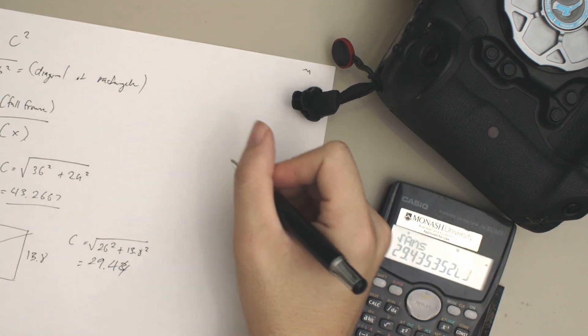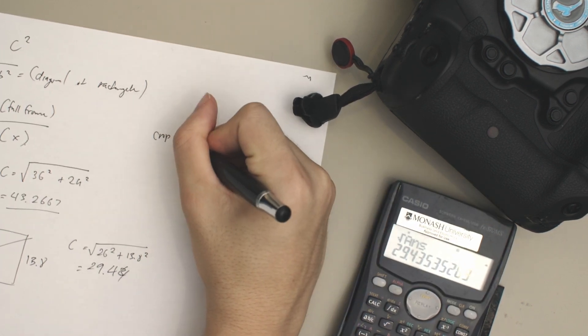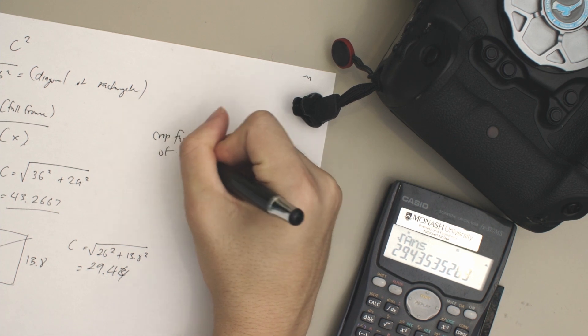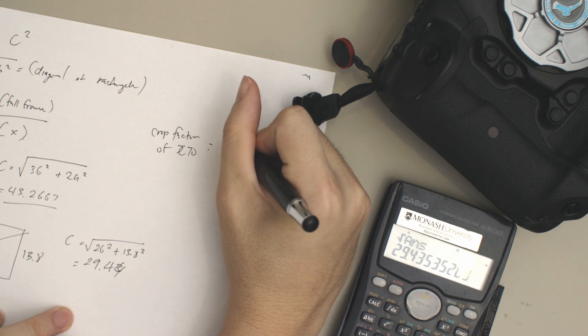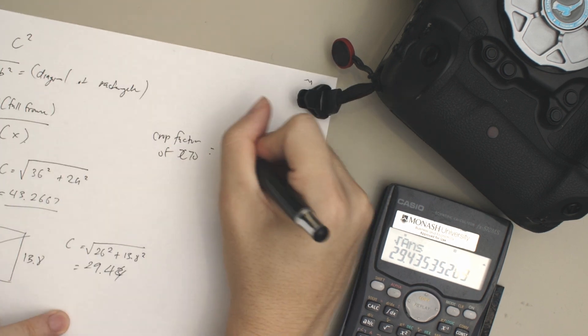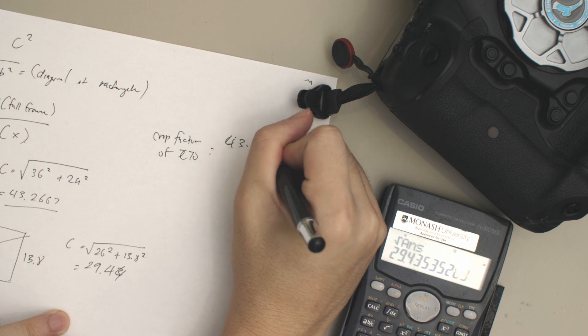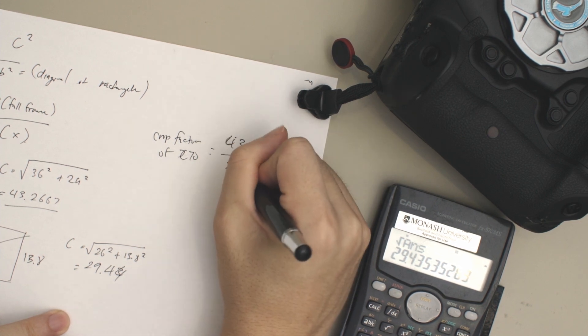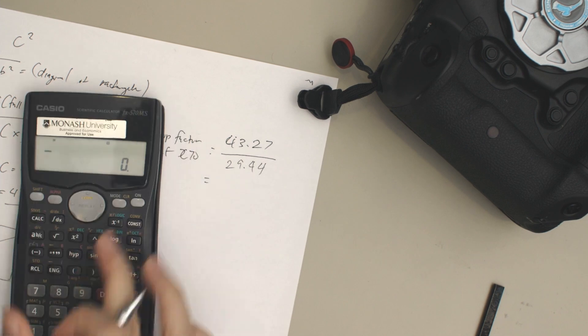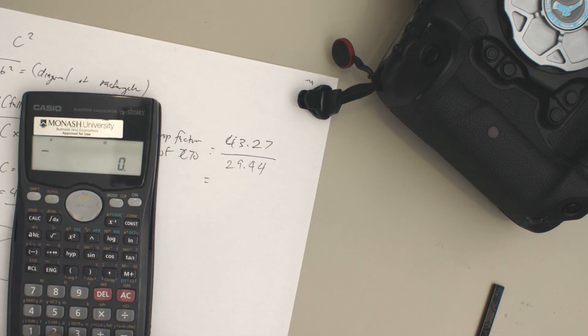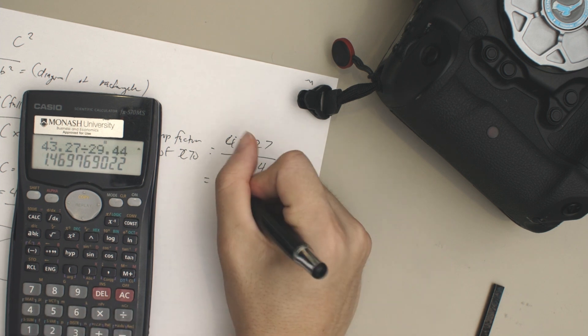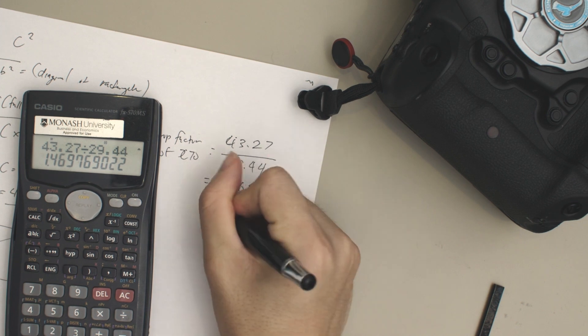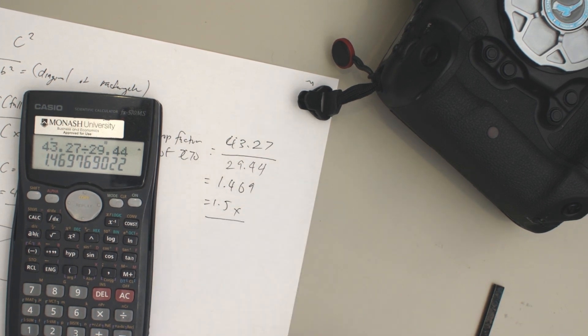So we want to find the crop factor of the C70, which is obviously full frame, which is this value right here: 43.27 divided by 29.44. If we input that into our calculator—43.27 divided by 29.44—we get 1.469, which is a 1.5 times crop factor.